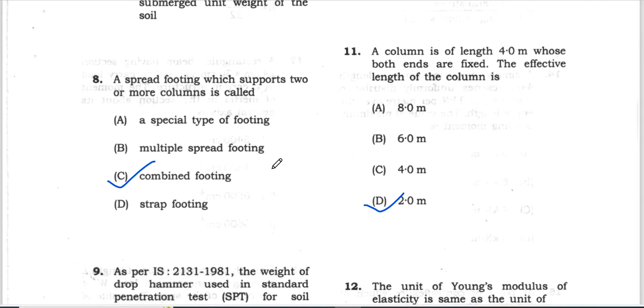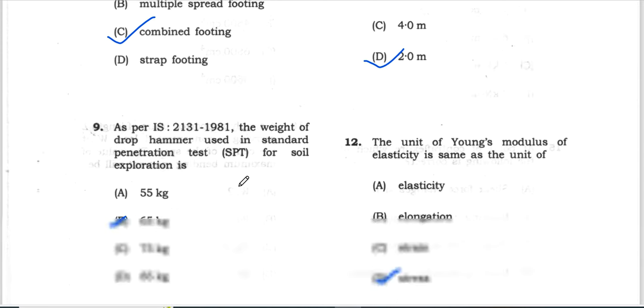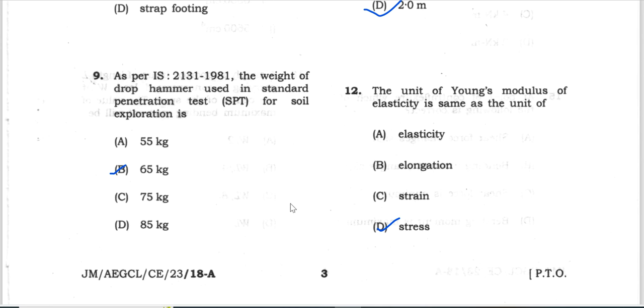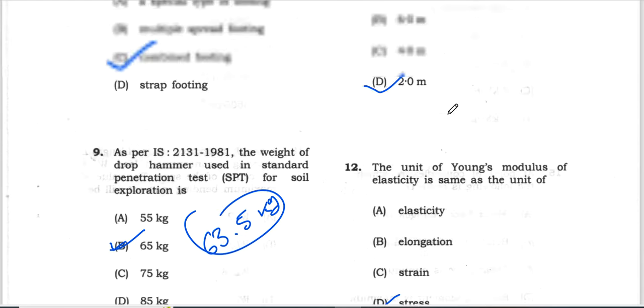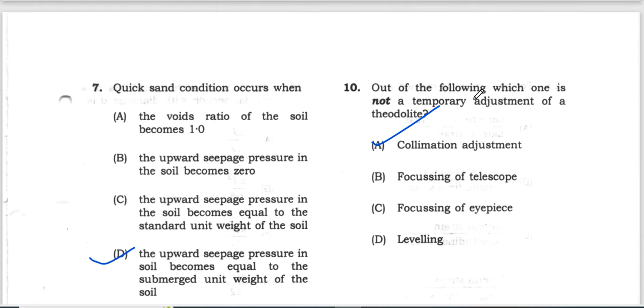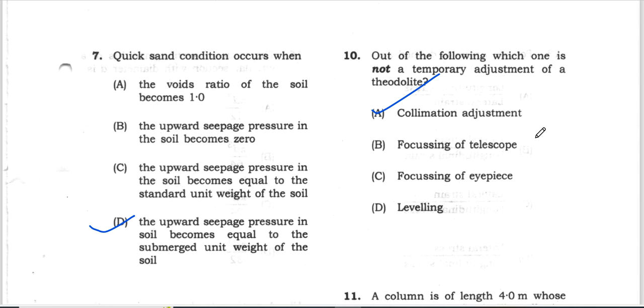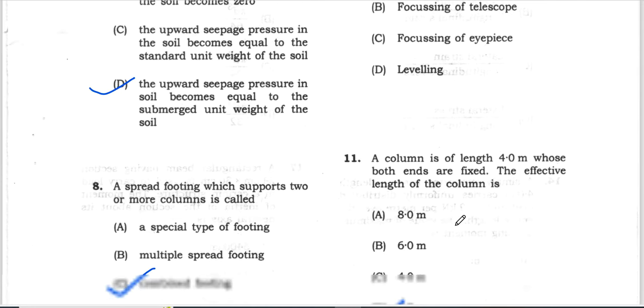Question six: The equation of deformation of a simply supported beam of length L is given as y equals x squared minus xL. The magnitude of curvature at point L/4 from the end is found using the curvature relationship: d squared y by dx squared. Double differentiation of x squared minus xL gives us 2. Option C is correct. Question seven: The quicksand condition occurs when the upward seepage pressure in the soil becomes equal to the submerged unit weight of the soil. In other words, effective stress is zero. Option D is correct.